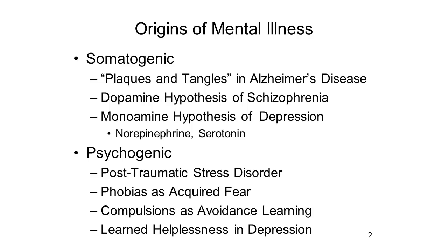Over the past 100 years or so, biological causes have been uncovered for a number of mental illnesses. Alzheimer's disease, once labeled as presenile dementia, is now known to be caused by the plaques and tangles in brain tissue. According to the dopamine hypothesis of schizophrenia, the symptoms and their underlying psychopathology are caused by excess activity of dopamine. And according to the monoamine hypothesis of depression, symptoms are caused by lower levels of the monoamines, which include norepinephrine and serotonin.